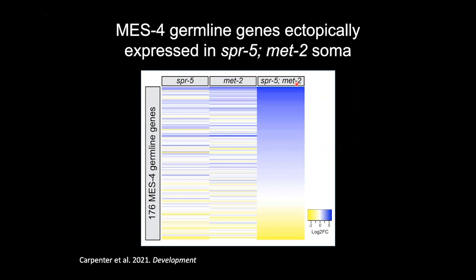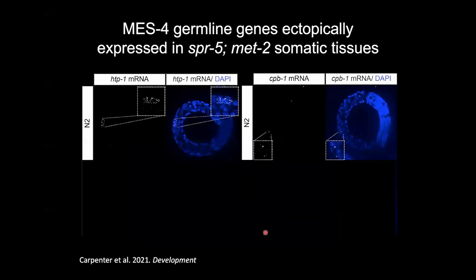To our surprise, germline genes were misexpressed — not only that, but they tended to be germline genes regulated by MES4 based on Susan Strom's 2010 publication. Looking at a heat map of log2 fold change from the RNA-seq data set, with yellow as down-regulated and blue as up-regulated, 108 of these 176 MES4 germline genes that had values in our experiment are synergistically increased in L1 larvae lacking SPR5 and MET2 reprogramming. This whole system is coming on.